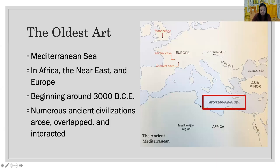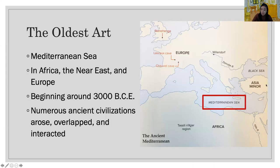This is the Mediterranean Sea, where the story of western art begins. It is surrounding Africa, the Near East, and Europe, beginning around 3000 BCE. Numerous ancient civilizations arose, overlapped, and interacted — they learned from one another, conquered each other, and transformed into the world.